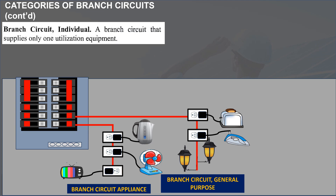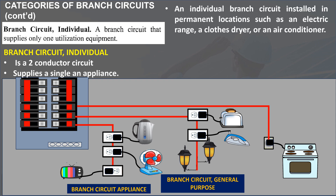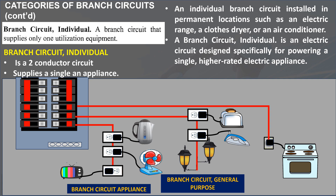Third, branch circuit individual: a branch circuit that supplies only one utilization equipment. Therefore, a branch circuit individual is a two-conductor circuit that supplies a single appliance. Branch circuit individual is installed in permanent locations such as an electric range, a clothes dryer, or an air conditioner. A branch circuit individual is an electric circuit designed specifically for powering a single, higher-rated electric appliance such as an oven, dryer, or HVAC system.